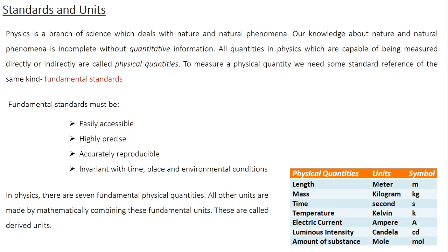For example, previously people used the rotation of Earth about its own axis for defining time or the second. But the rotation of Earth about its axis is not uniform — during different periods in a year, the rotation speed may vary slightly. On the other hand, the rotation of Earth about the Sun is more consistent and unaffected by atmospheric changes or other external factors. So people started using Earth's rotation around the Sun as a standard for defining a second.